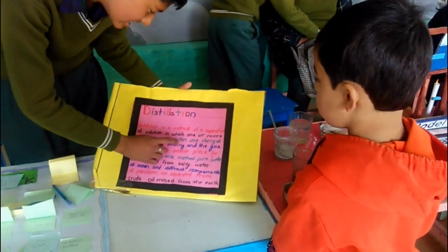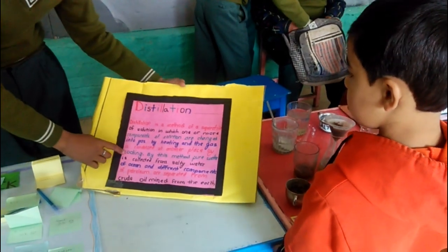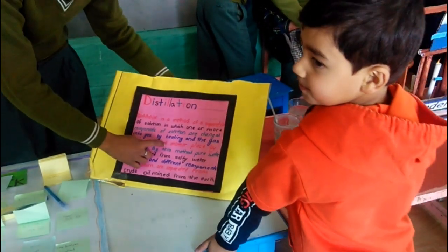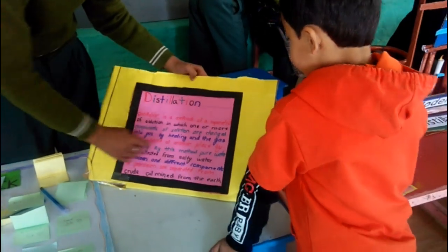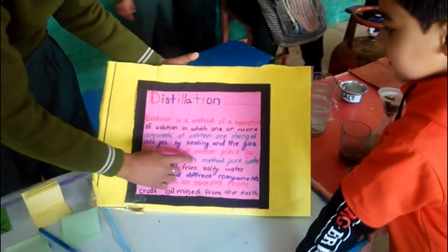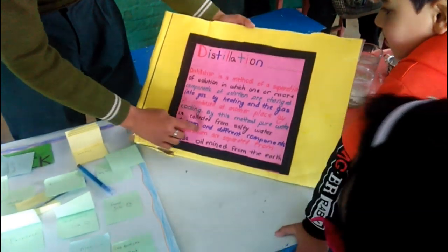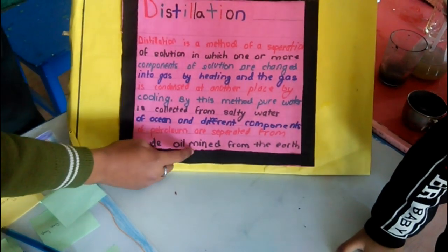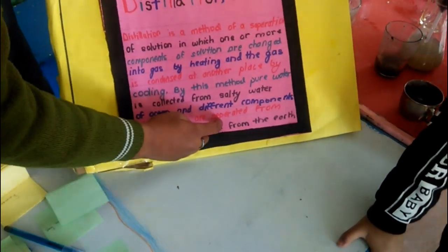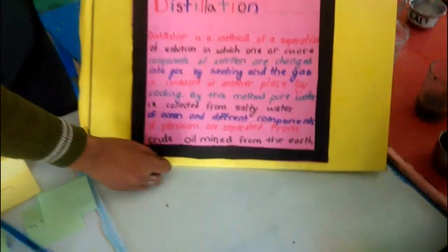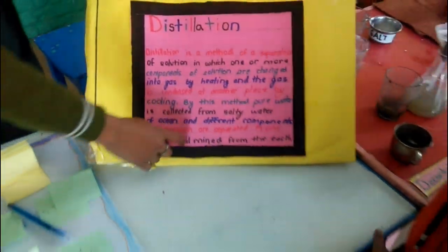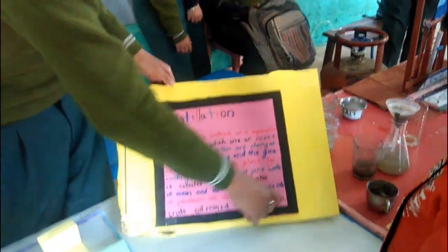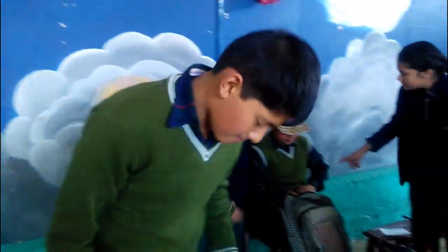By heating, gas is separated or controlled by cooling. By this method, the different components of petroleum are separated. This is a mixture, and a mixture like this can be separated into its components.